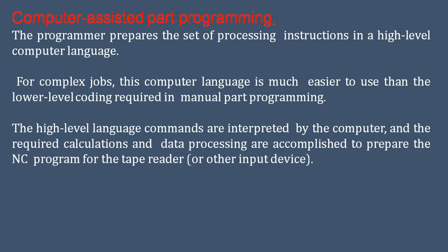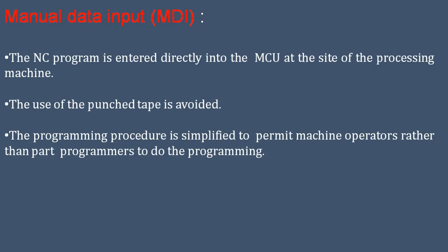Second, computer assisted part programming, in which a program prepares the set of processing instructions in a high-level computer language for complex jobs. This computer language is much easier to use than the lower-level coding required in manual part programming. The high-level language commands are interpreted by the computer and the required calculations and data processing are accomplished to prepare the NC program for the tape reader or input device.